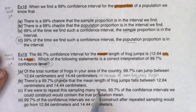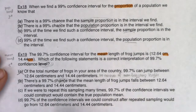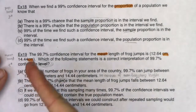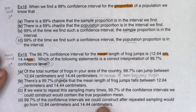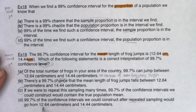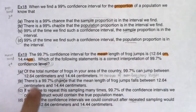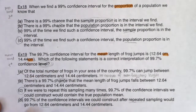Option C says: if we were to repeat this sampling many times — that's looking good already, that's a level interpretation — 99.7% of the confidence intervals we could construct would contain the true population mean. There it is. If we repeated this experiment and constructed interval after interval, 99.7% of them would capture the parameter. Option D says 99.7% of intervals after repeated sampling would go from 12.64 to 14.44 — but not every interval will have exactly those same bounds. There's variability in the sampling distribution. So C is our answer.